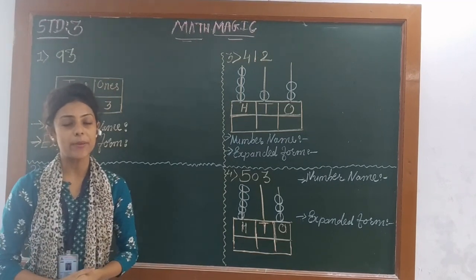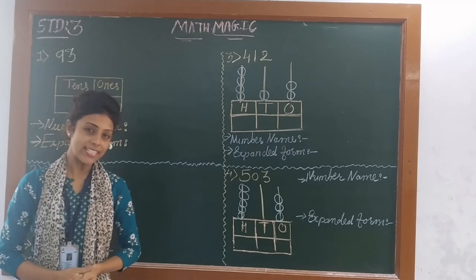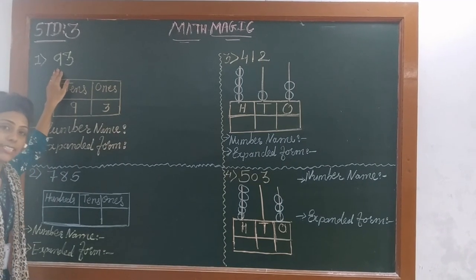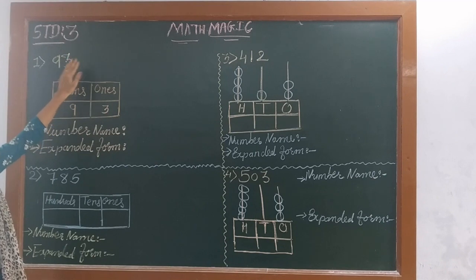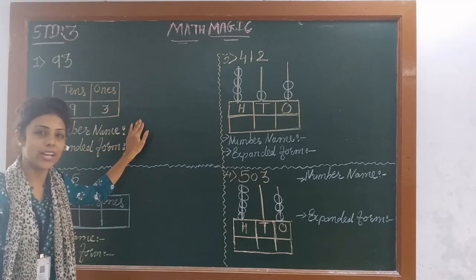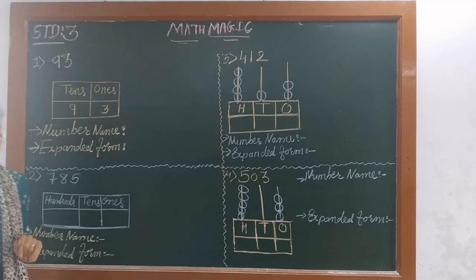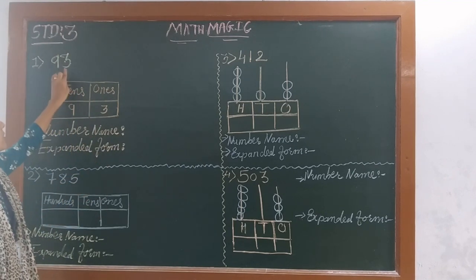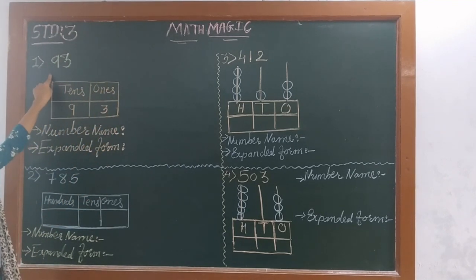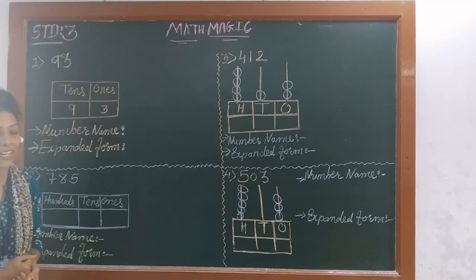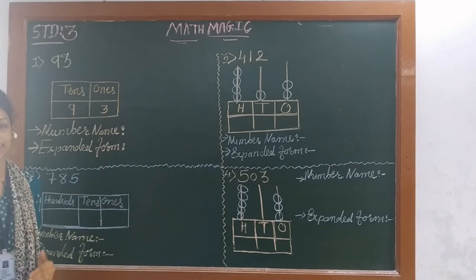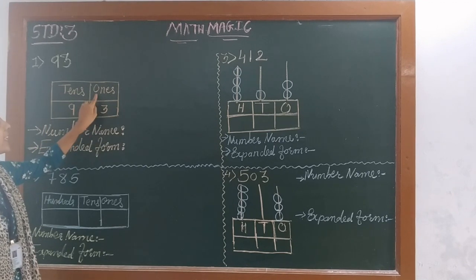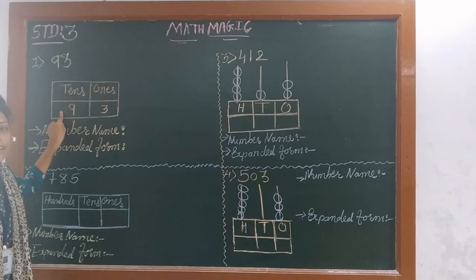Let's revise some other topics which you have already learnt. Let's see number 93 and number 193. In the 93 place value table, how to write the place value — we will start from the right side. So 3 is at 1's place and 9 is at 10's place. So how to read this number? 9 is at 10's place and 3 is at 1's place, so we will read it as 93.